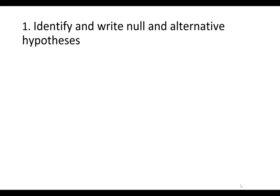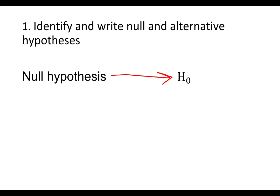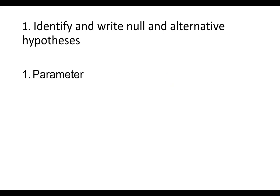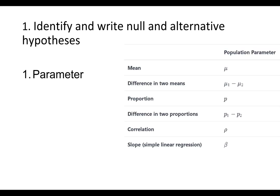Our first learning objective is to identify and write null and alternative hypotheses. This corresponds to the first step in the five-step hypothesis testing procedure. Regardless of the parameter being tested, you're going to have two hypotheses: the null and the alternative. The null hypothesis, written as H sub 0, is a statement of no difference in the population — because null means nothing. The alternative hypothesis, H sub A, is a statement of a difference in the population. To write our hypotheses, there are three pieces of information that we need: the parameter being tested, the direction, and the hypothesized value of the population parameter.